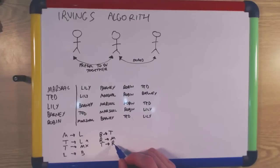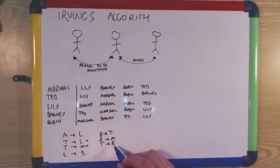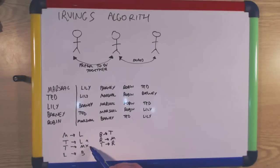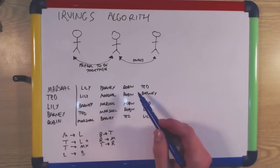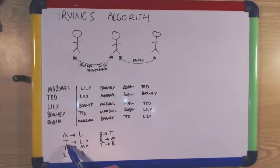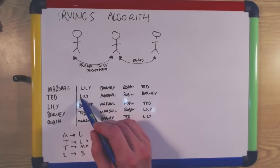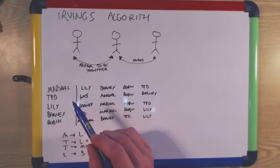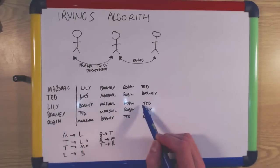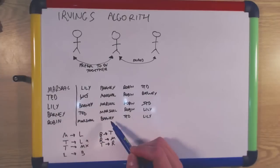Ted then proposes to Robin and since Robin hasn't received any proposals she accepts. Now we have these two rejected proposals, so we alter our preference table by removing the pairs of the people who have been rejected. Where Lily rejected Ted's proposal, we remove Ted from Lily's preference list and Lily from Ted's preference list.